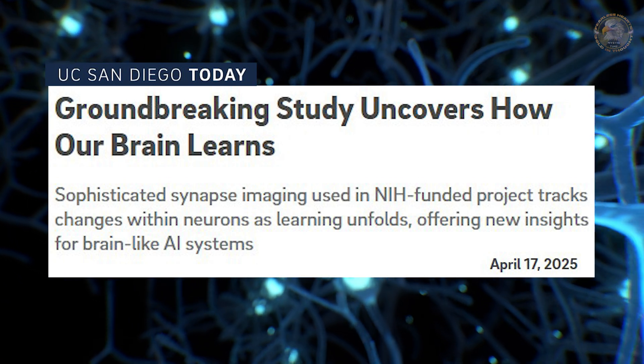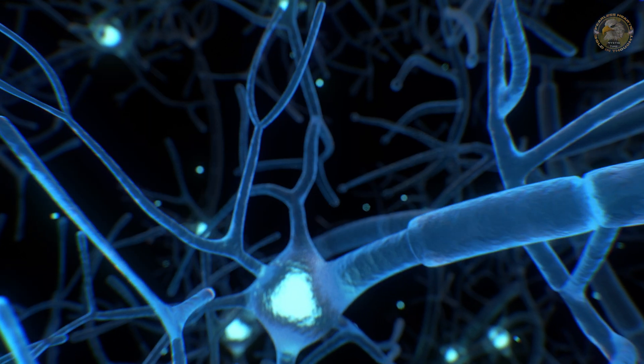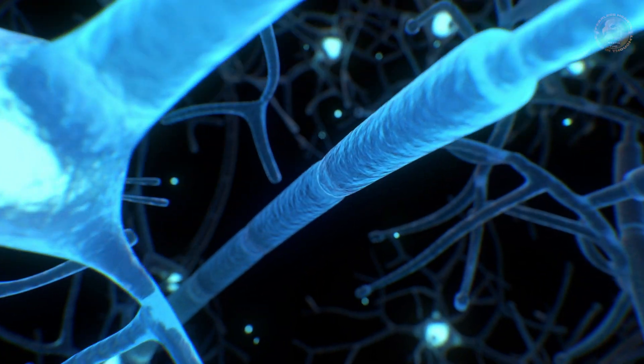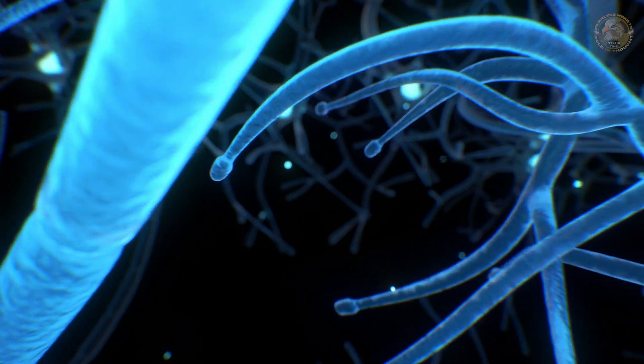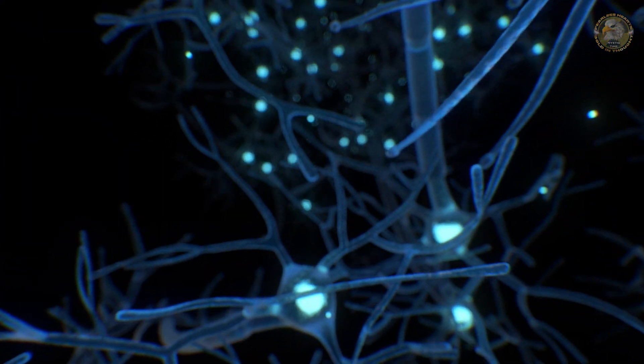That's right. Your neurons are multitaskers, overachievers, little drama queens running parallel algorithms like it's the Olympics of cognition.